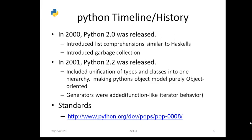In 2001, Python 2.2 was released, which included a unification of types and classes into one hierarchy, making Python more fully object-oriented.